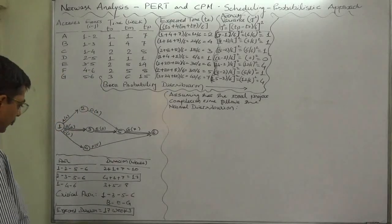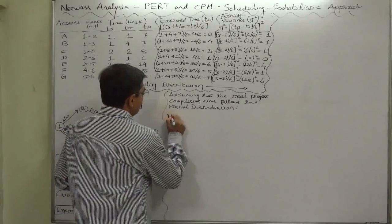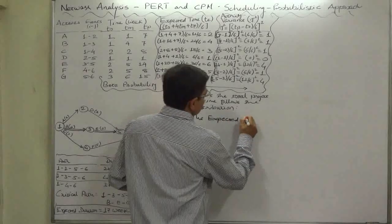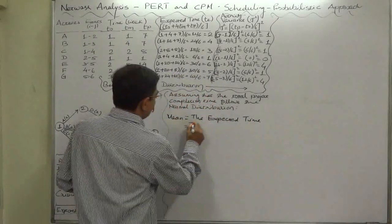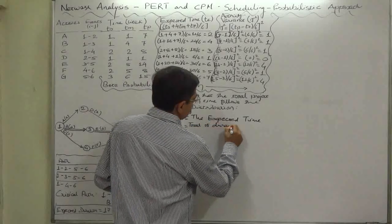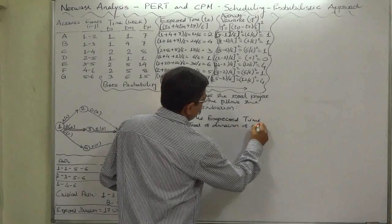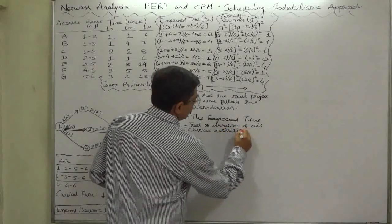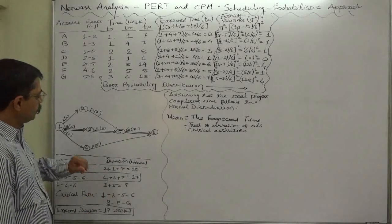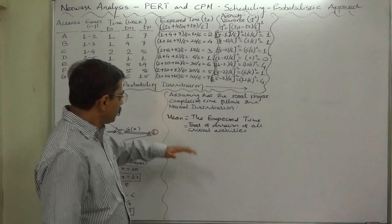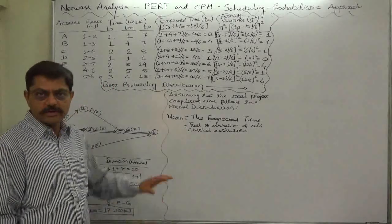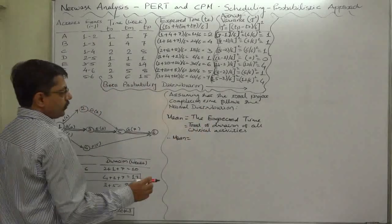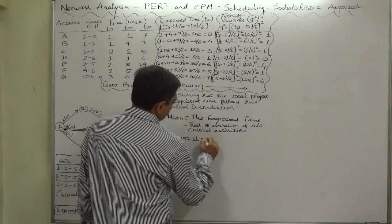What is the mean time? The mean time is this expected time. So here the mean will be the expected time — that is, the total duration of all critical activities. That is why we need to determine the critical path and recognize the critical activities. For normal distribution we use the symbol mu, and the mean comes to 17 weeks.